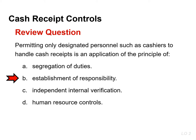The correct answer is B, establishment of responsibility. Control is most effective when one person is responsible for a given task. Segregation of duties focuses on having different individuals responsible for related activities, such as a cashier and a door person at a movie theater.